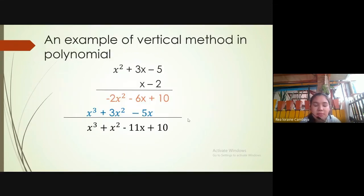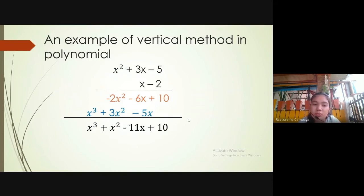An example of the vertical method in polynomials. We have x squared plus 3x minus 5, and x minus 2. We multiply negative 2 by x squared plus 3x minus 5. The result is negative 2x squared minus 6x plus 10.